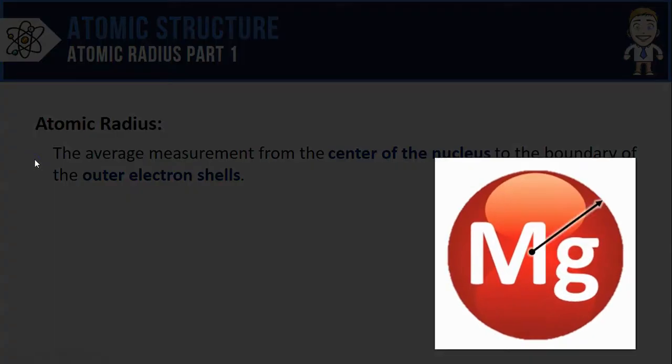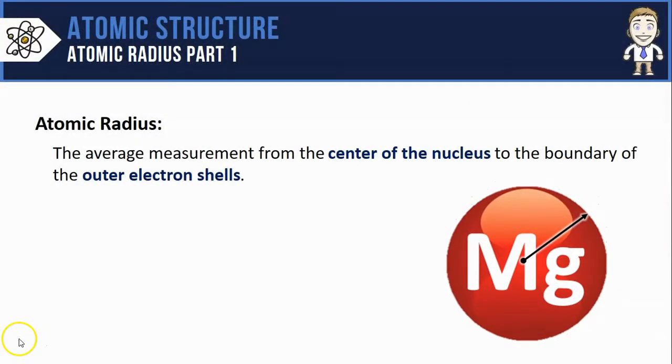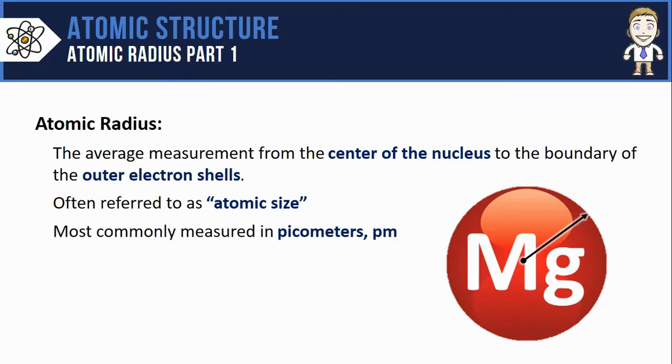Essentially it's the radius of the atom, like I've got shown here on magnesium. It's sometimes referred to as atomic size because an atom with a larger radius is going to be a larger atom. It's also measured in super teeny tiny distance units called picometers, like magnesium's 150.